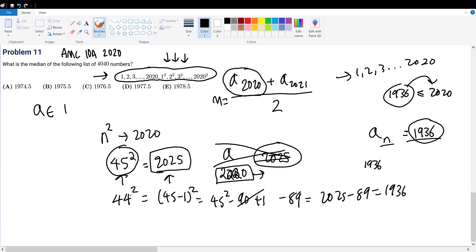Well, what is the perfect square root of 1936? It's 44, meaning that we have traversed 44 terms within the second sequence of 1 squared, 2 squared, 3 squared, all the way to 2020 squared to get to the 1936th term.